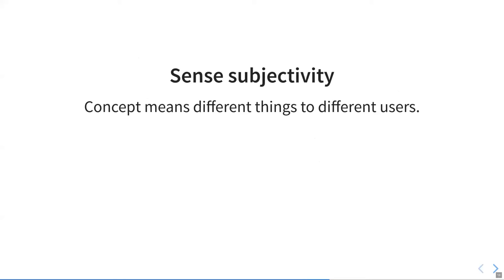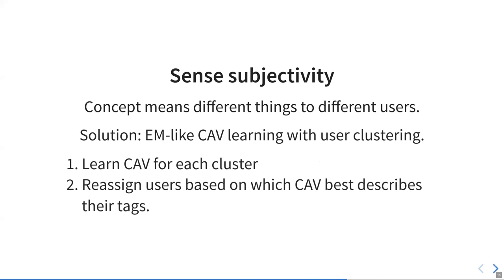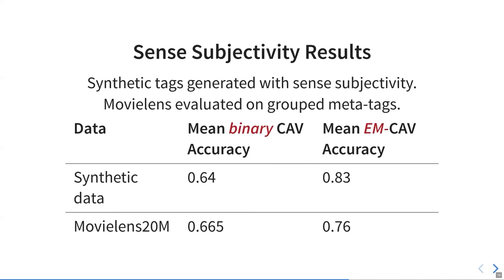For the sense subjectivity, I've said that a concept means different things to different users. The way we approach this is by using an expectation maximization-like CAV learning approach, where we cluster users and then learn optimal CAVs for each cluster and then reassign users to clusters based on which CAV best describes the tags they use. This approach also allows us to improve accuracy for sense subjective tags quite a bit on the synthetic data.